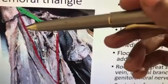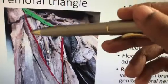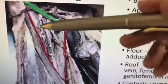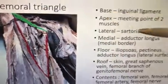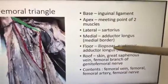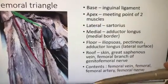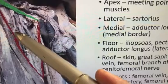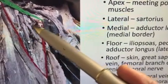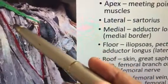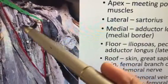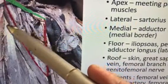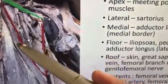The floor consists of four muscles: iliacus, psoas major, pectineus, and adductor longus — these are the minimum points expected in your paper. The contents are: femoral artery, femoral vein, and laterally the femoral nerve. Remember: A for artery, V for vein, N for nerve — the nerve is laterally placed.